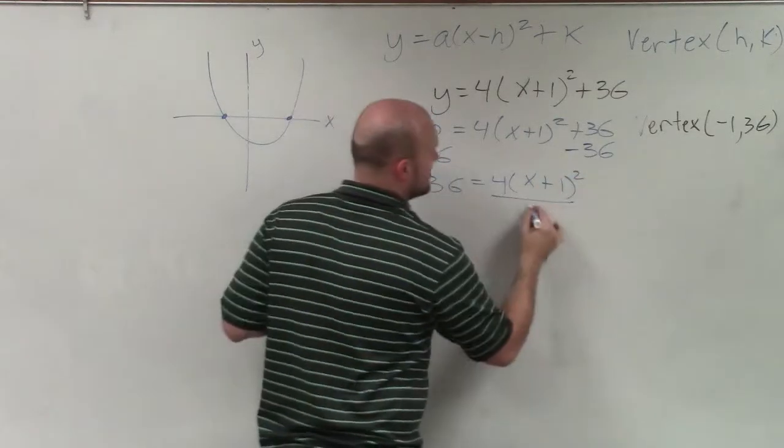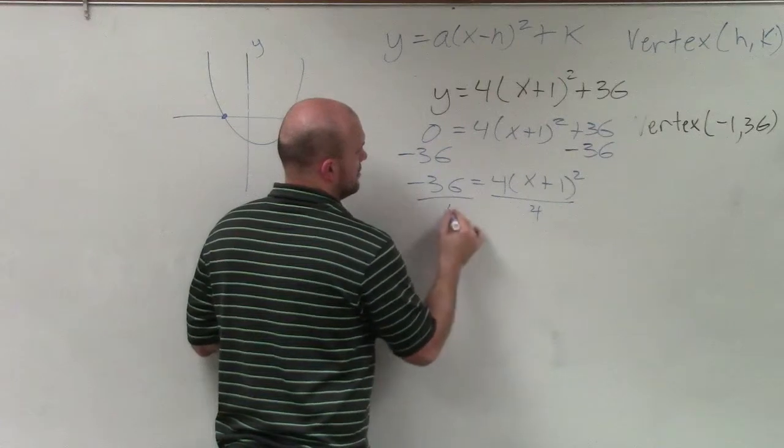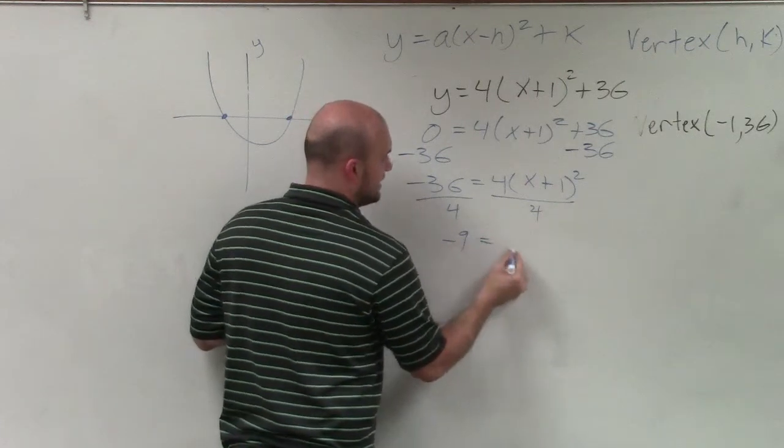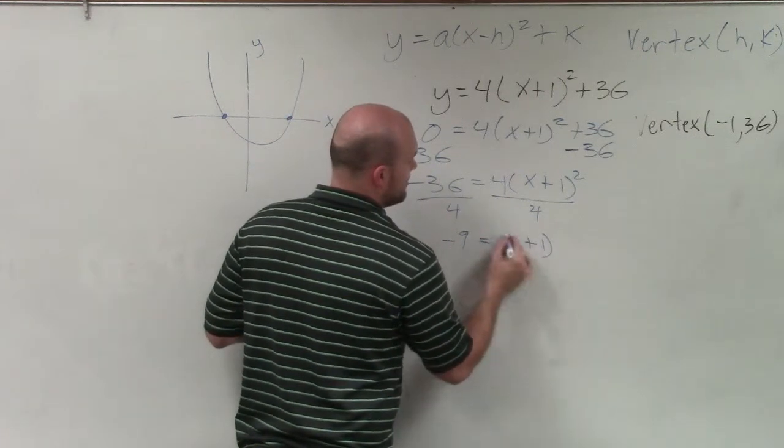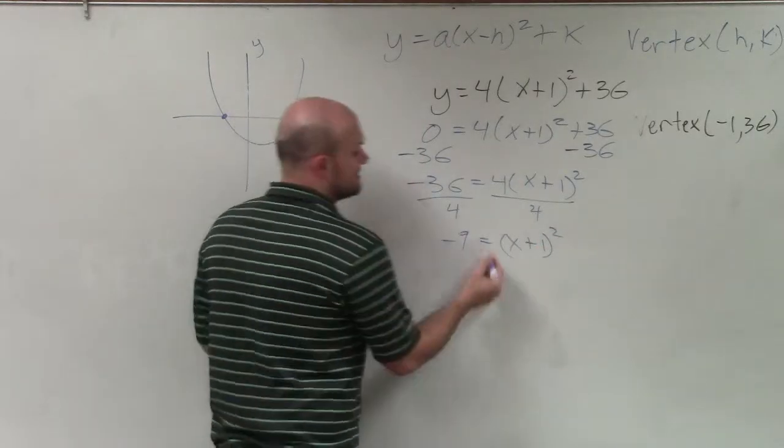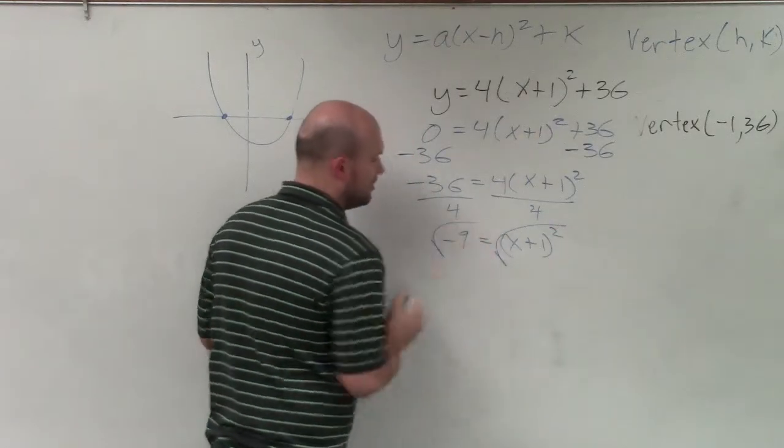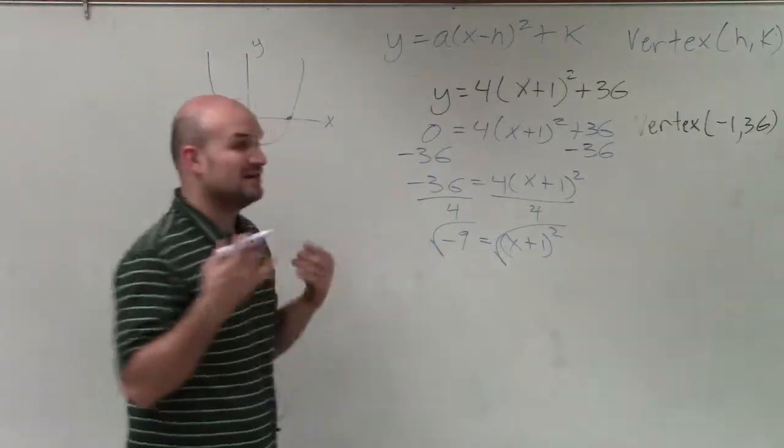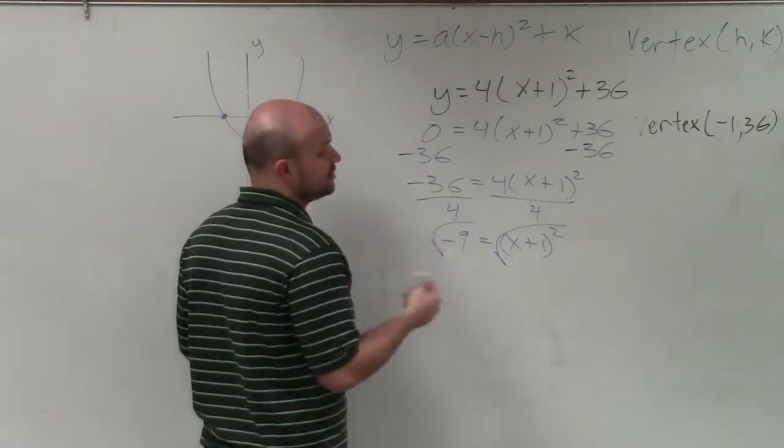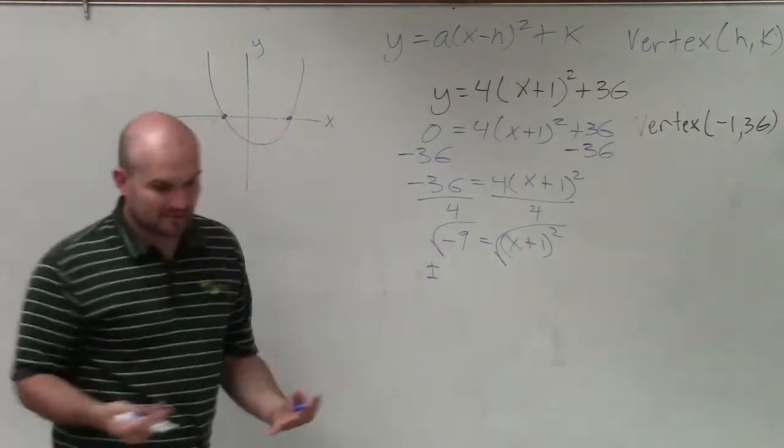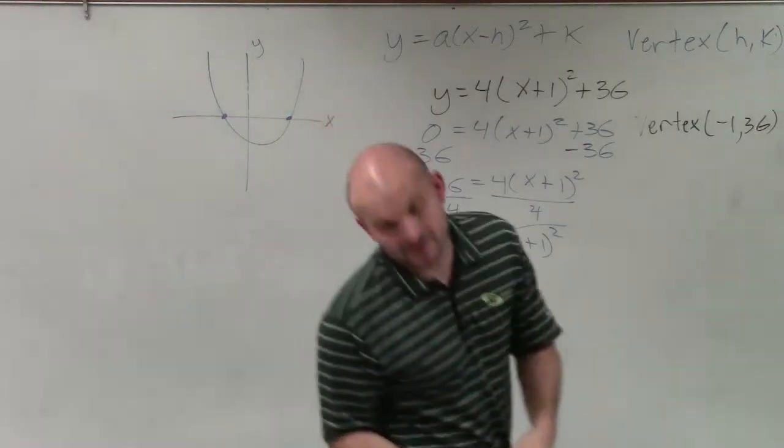Now I divide by 4. Therefore, I get negative 9 equals x plus 1 squared. Now I need to take the square root. So I take the square root of both sides. And remember, whenever we introduce the square root, we have to make sure we include the positive or the negative. And we also have a problem here because we're taking the square root of a negative number.